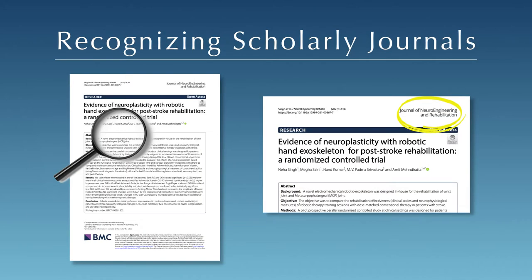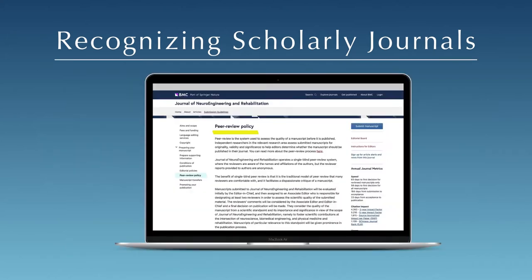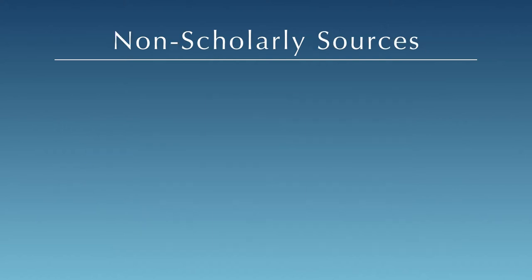When you think you've found a scholarly article, it's a good idea to check whether the article is published in a peer-reviewed journal. You can usually find this information on the journal website — check the homepage or about page to see if it describes a peer review or referee process.